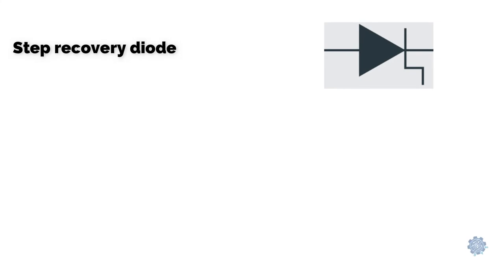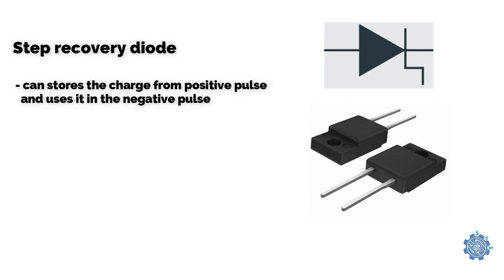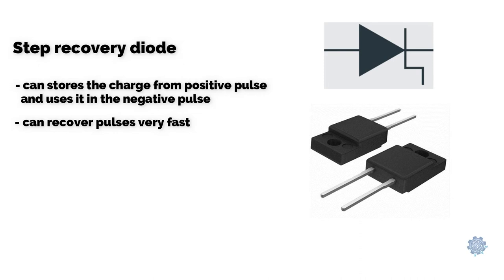Step recovery diode, or snap diode, is a diode which can store the charge from a positive pulse and uses it in the negative pulse. This diode can recover pulses very fast and works at very high frequencies.